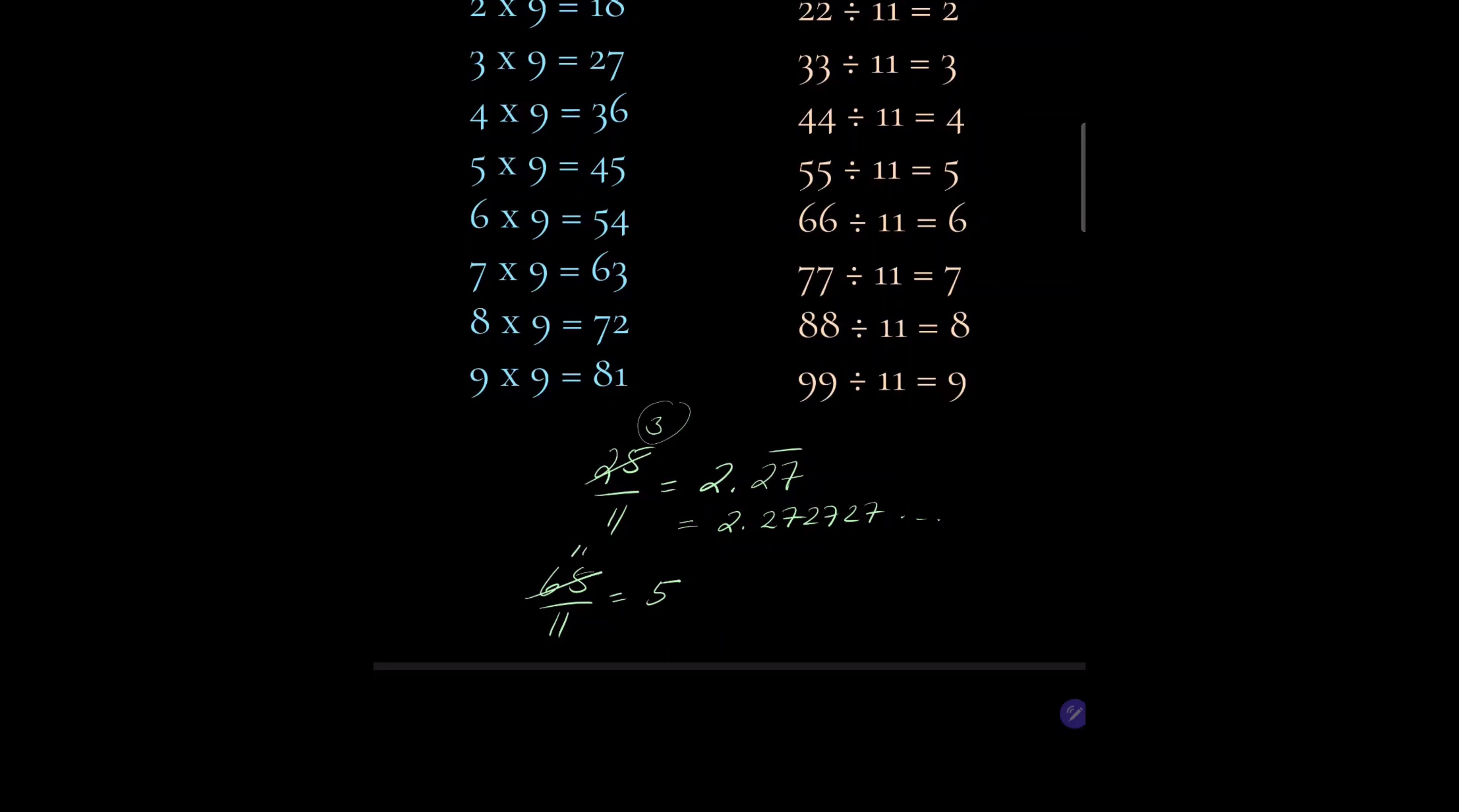So we write 5, and then since 5 times 11 is 55, we cross out 65 and there's 10 left over. 10 divided by 11 would be 10 times 9, which is 90, and that would give us 5.90 repeated, which is 5.909090 and so on.